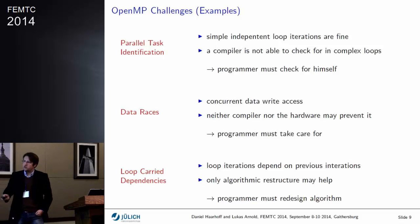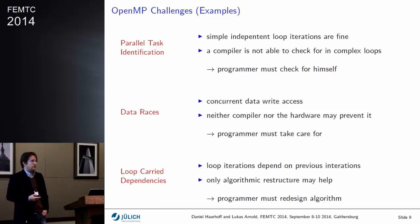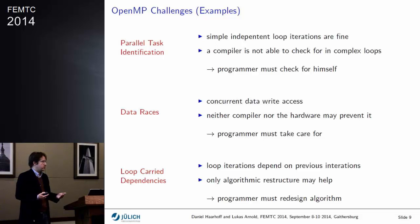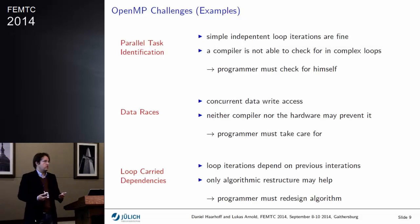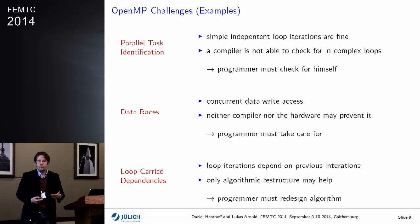As a third challenge: loop-carried dependencies, which means each loop iteration depends on the result of another iteration. They are not independent of each other. But in a few cases, when you have a closer look at the structure, you can find transformations or alternative algorithms that yield independent tasks — though this needs careful thinking and redesign of algorithms.